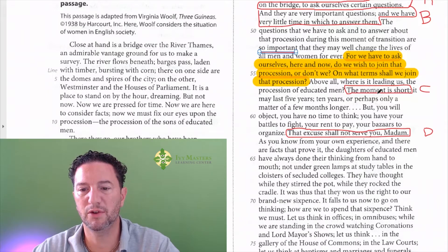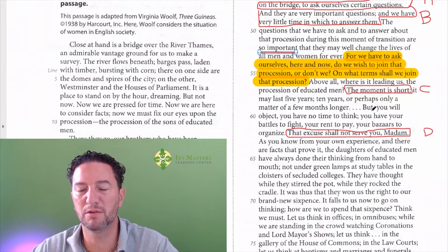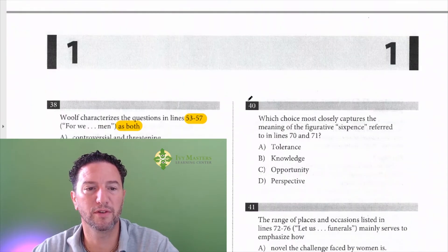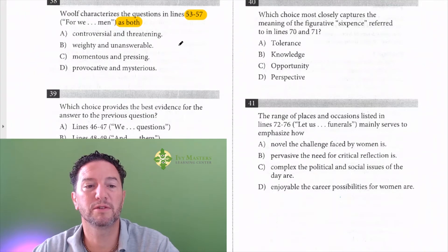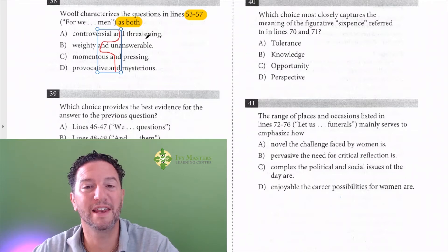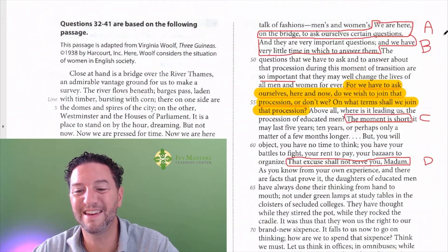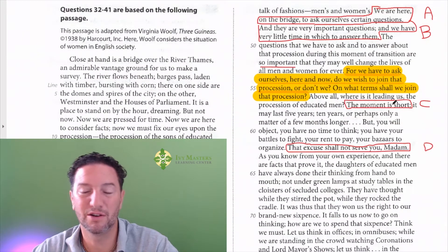And right after we get answer choice C, which is the moment is short. Now, when we look at the answer choices, this is really important for this type of question. Sometimes students will see half of the answer choice. That's not good enough. It's got to be before and after. So if I'm looking at the moment is short, that's only conveying one sentiment, one idea. So that's not going to be it.